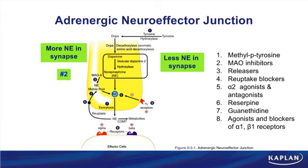Monoamine oxidase inhibitors, like phenelzine, block this enzyme. MAOA is found in the cytoplasm of adrenergic nerves and specifically metabolizes norepinephrine inside these nerves. During reuptake, norepinephrine is free in the cytoplasm — part of the mobile pool — and as NE is recycled back into storage vesicles, monoamine oxidase can metabolize it. Blocking this enzyme with an MAOI allows more norepinephrine to be recycled into the storage vesicle, and therefore more can be released into the synapse.